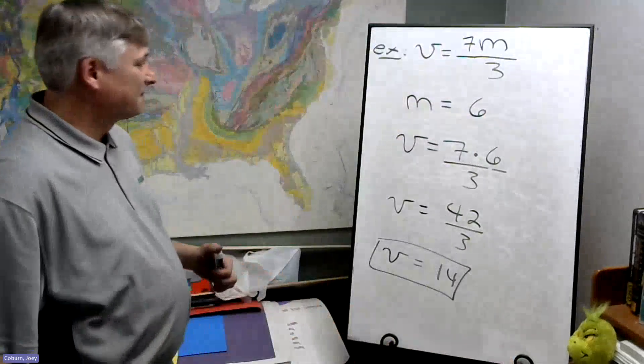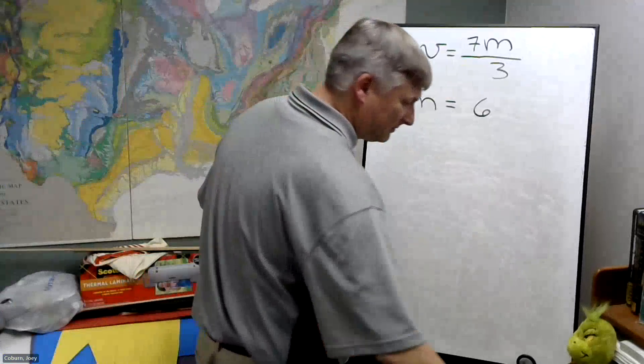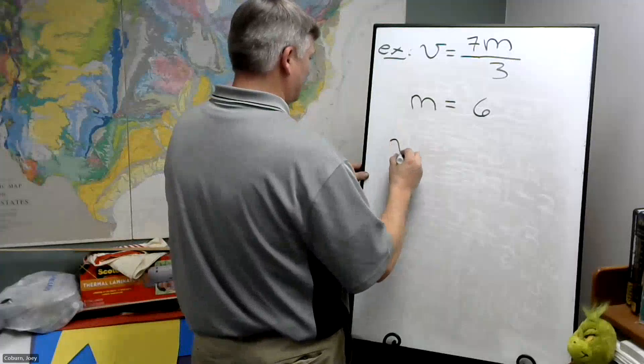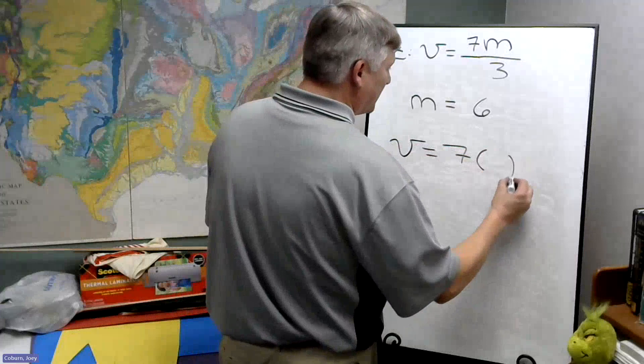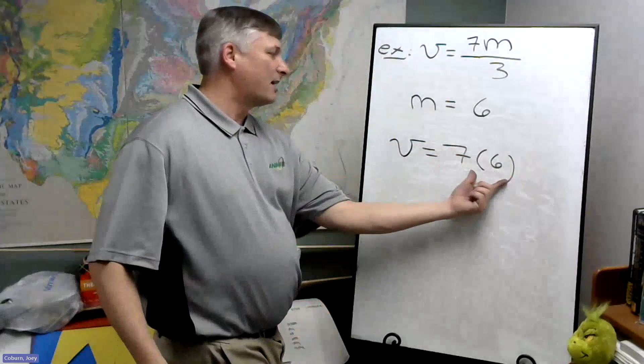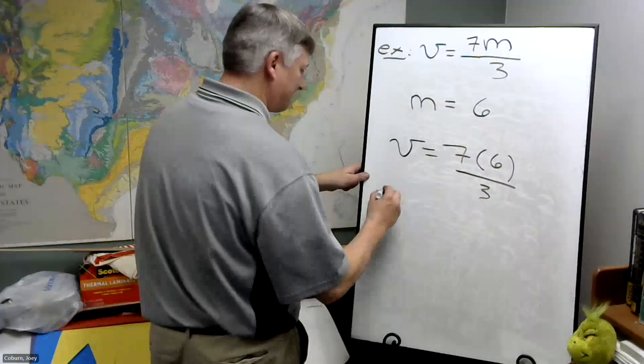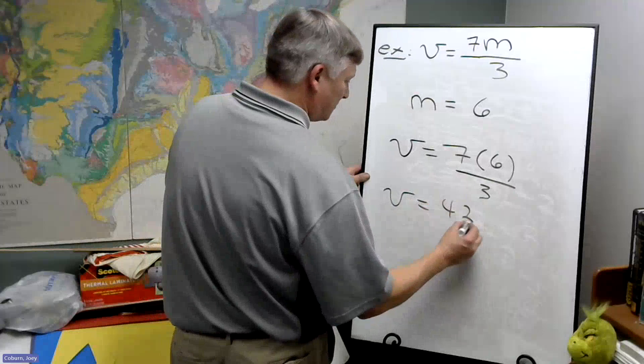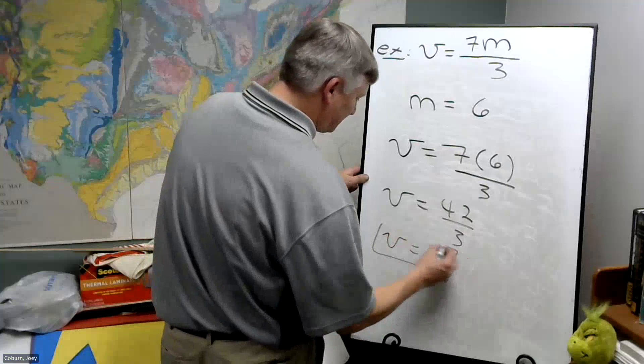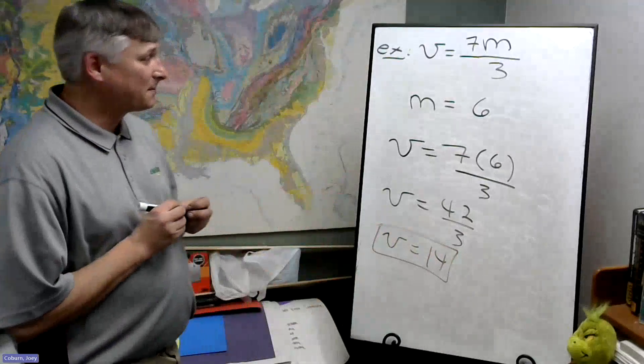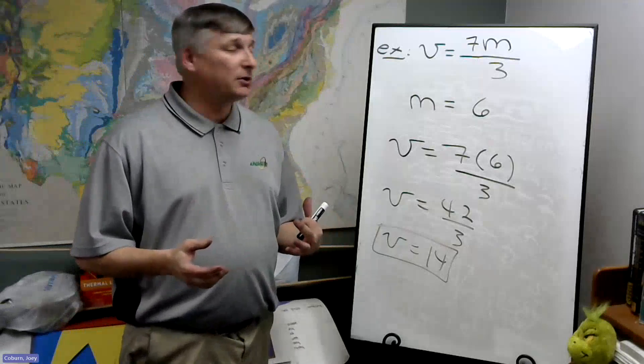Now, the other way of doing this. We could use parentheses to mean 7 times 6 divided by 3 or 42 divided by 3. That's 14. So we can do that also. So that's an introduction to formulas with multiplication and division.